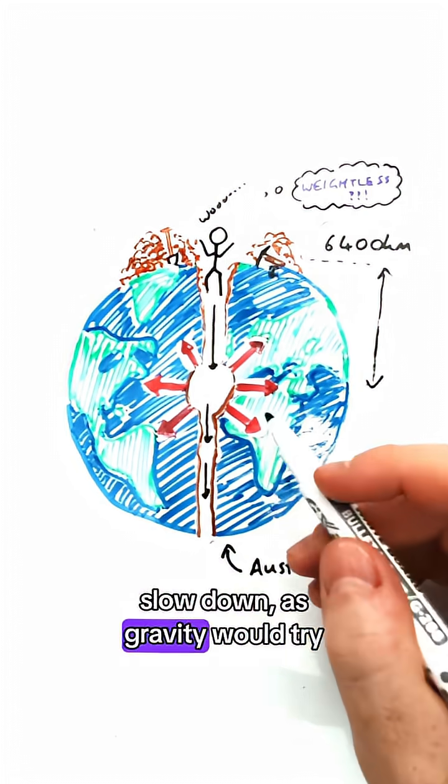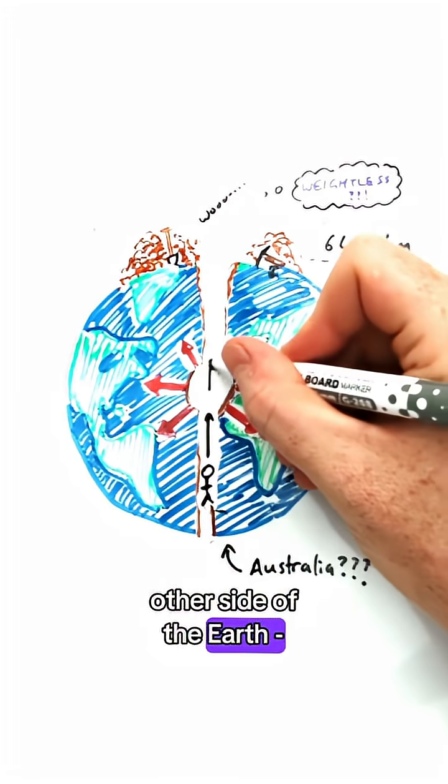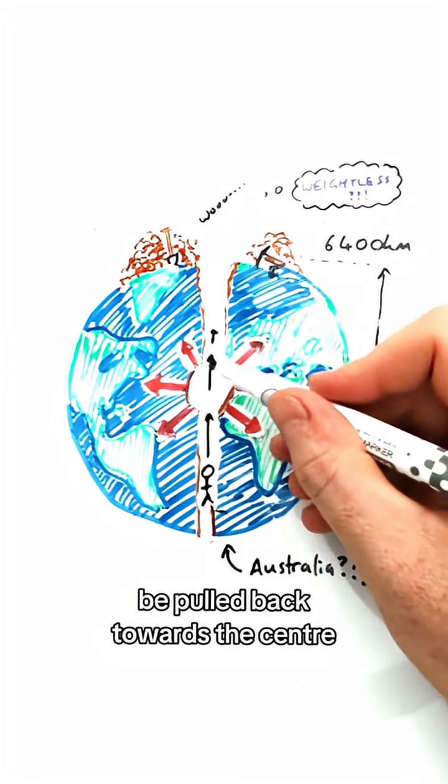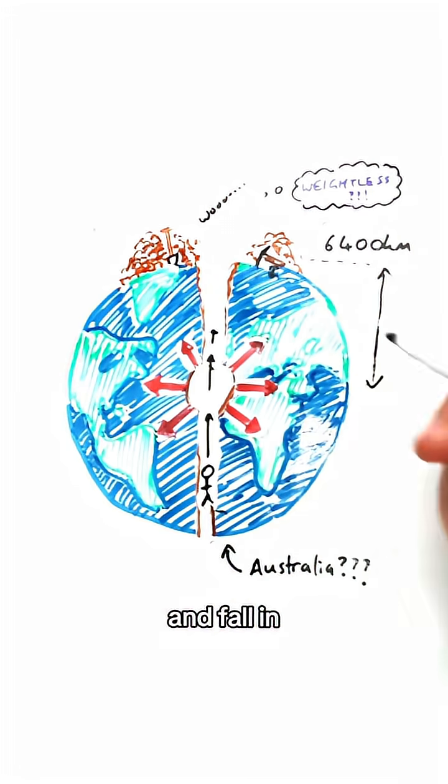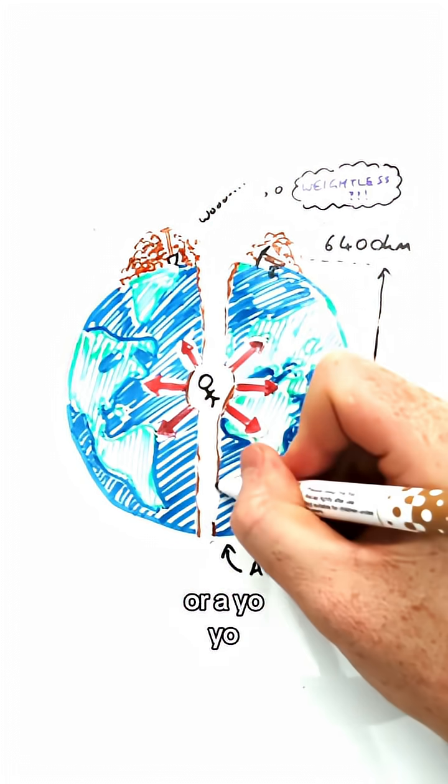Once you pass the center, you would, however, slow down as gravity would try and pull you back in. Now you'd never make it to the other side of the earth. Before you'd reach the end, you'd be pulled back towards the center and fall in and then go to the other side and back out, just like a giant bouncy ball or a yo-yo.